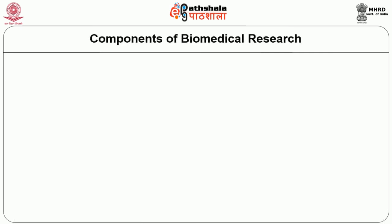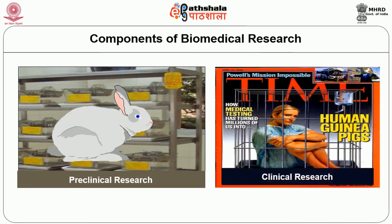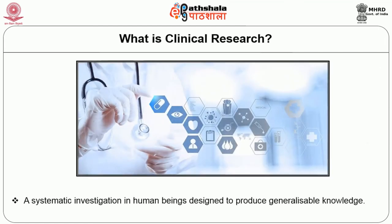When we are talking of biomedical or scientific research there are two components. One is using animals for experimentation, the other is using human beings for experimentation. Animal experimentation is called pre-clinical research and human experimentation is called clinical research. Clinical research is a systematic investigation in human beings which is designed to produce generalizable knowledge. We do research to get new knowledge or to change the existing knowledge, and we will see later what exactly we mean by human beings.